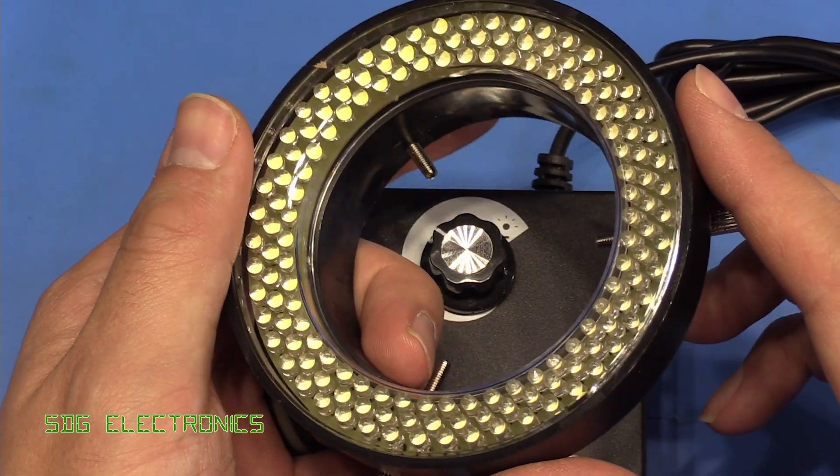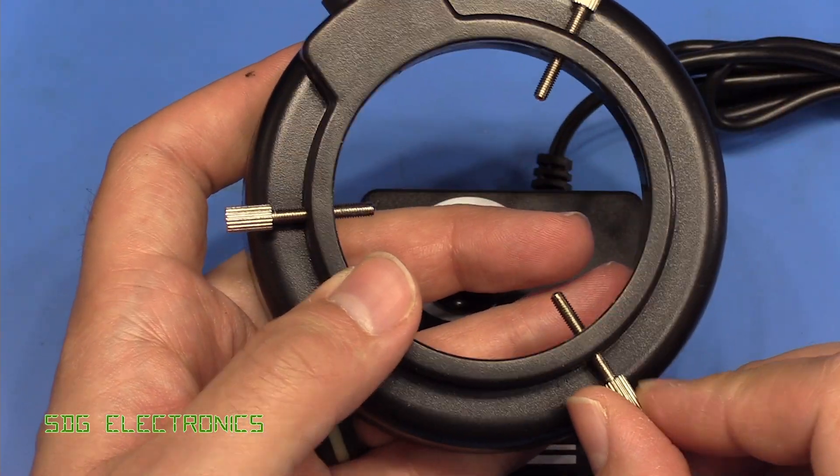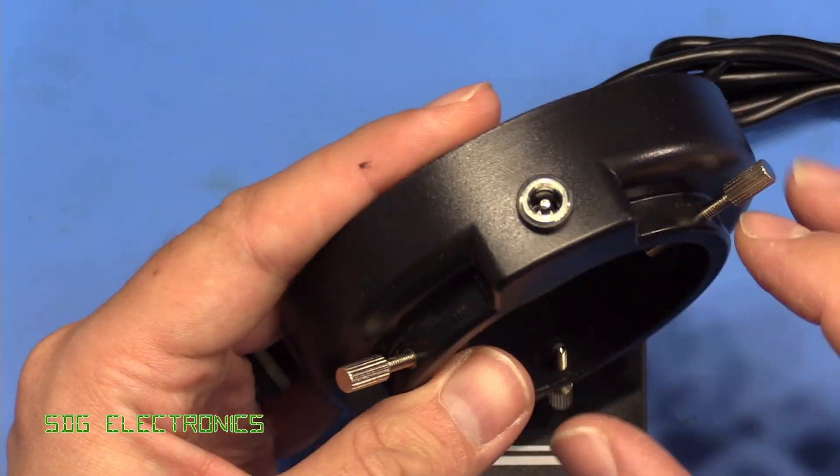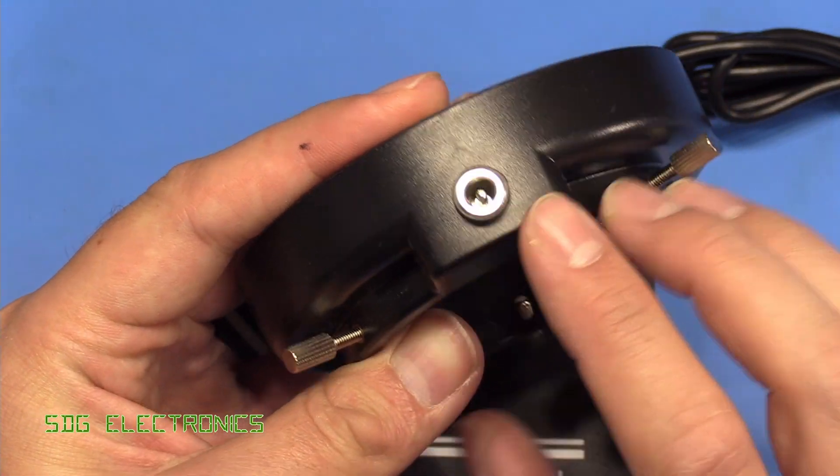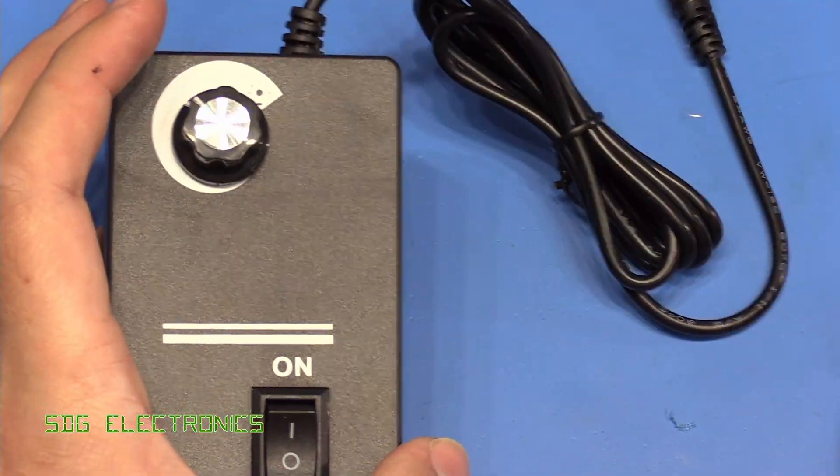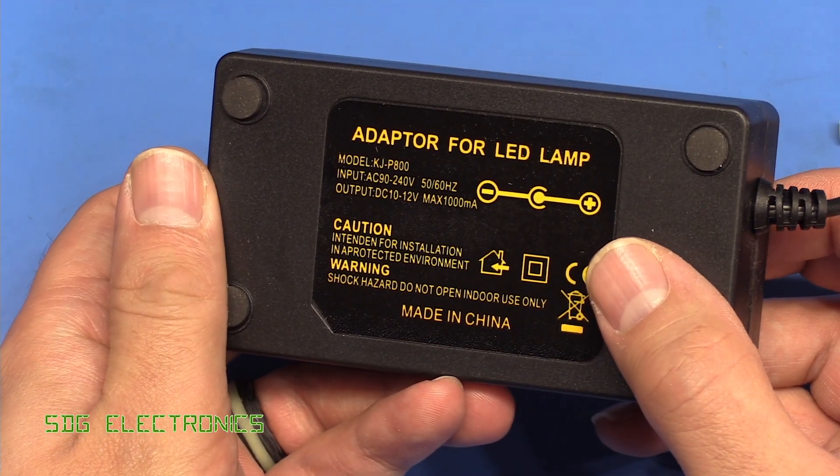Here we have the LED ring light, so it's a bunch of white three millimeter LEDs, a couple of screws there to clamp it on to the microscope lens and then we've got a DC barrel jack. Now this actually connects to a brightness controller rather than just taking in the 12 volts directly, so this is an adapter for the LED light.